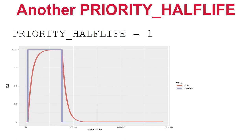Some sites do not want historical usage to play a part in current allocation decisions. Once a submitter has stopped using slots, those sites want HTCondor to forget past usage. The easiest solution is to set the priority half-life very small — for example, setting it to 1 will result in a priority curve that closely matches the actual usage curve.